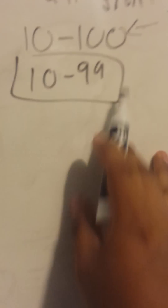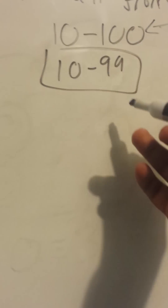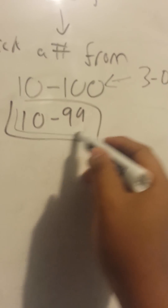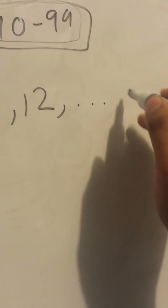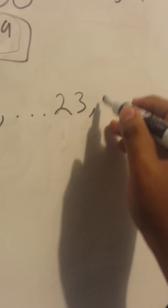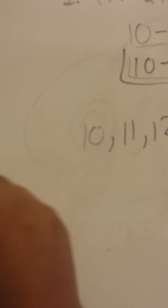So from 10 to 99, you pick a two-digit number. Then he says add the two digits and subtract the result from the number you chose. If we list some numbers — 10, 11, 12... 23, 24, 25 — the interesting thing is that he's actually using mod 9, though he probably just memorized the trick.